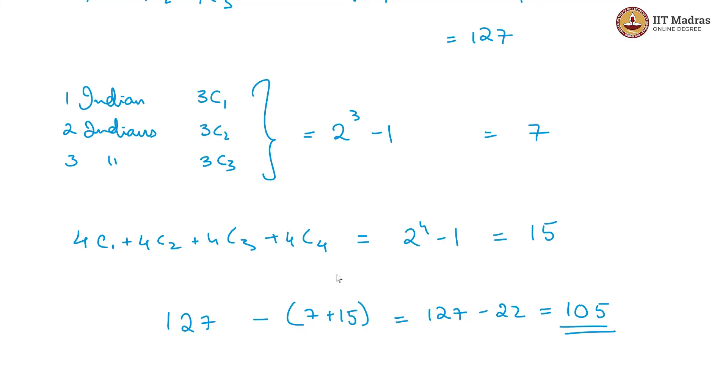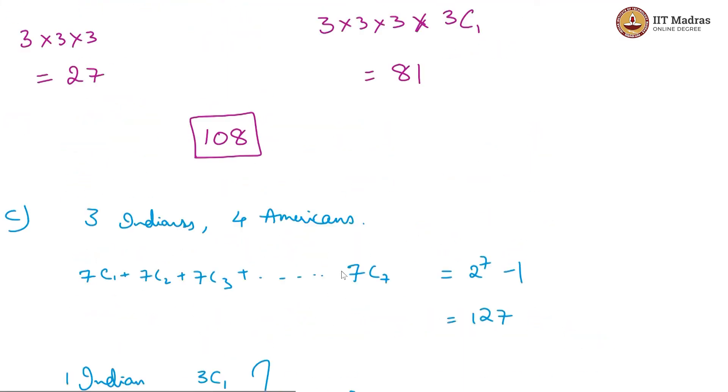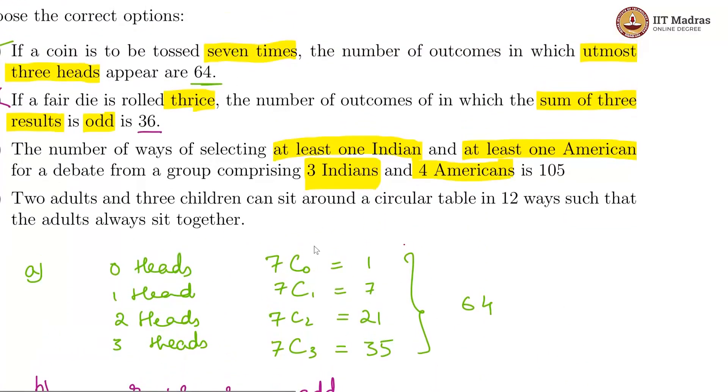So, this is the number of ways to pick a debate team in which there is at least one Indian or one American and 105 is correct. So, C is also correct.